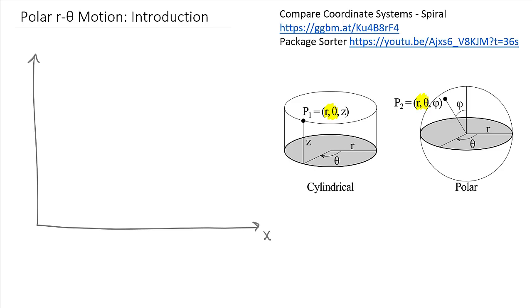Let's set things up in a Cartesian coordinate system x and y so we can contrast that with r and theta. A very important part of r-theta: while the r and theta axes do move with the particle, their origin point does not. In an r-theta coordinate system you must have a non-moving origin point that your r vector is going to rotate around.